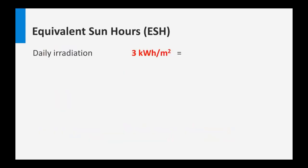There were also discussions on equivalent sun hours. Let's consider a daily irradiation of 3 kilowatt hours per square meter. This means that per day we have a total energy of 3 kilowatt hours of sunlight incident on 1 square meter. We can express this as power times time: at standard test conditions of 1 kilowatt per square meter, that's 1 kilowatt per square meter times 3 hours. So to accumulate this daily irradiation under standard test conditions, we need 3 hours — this is equal to 3 equivalent sun hours.